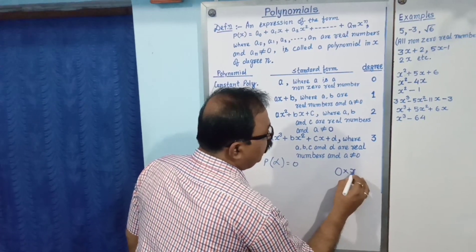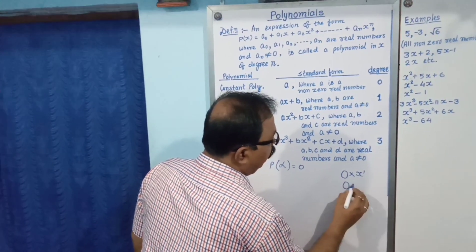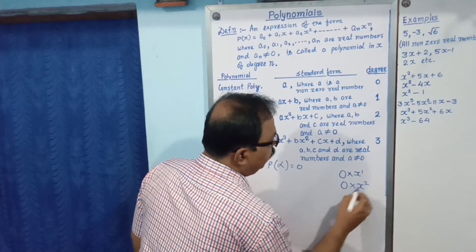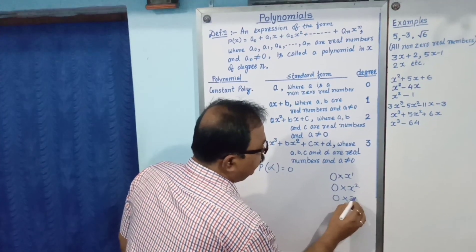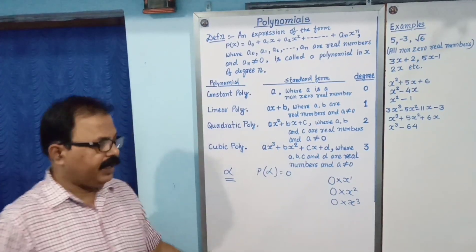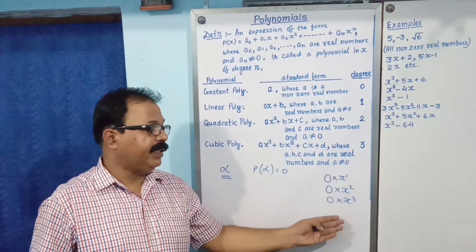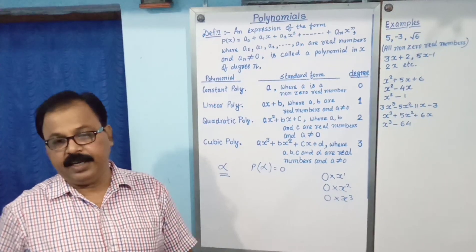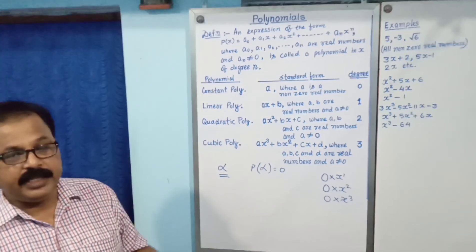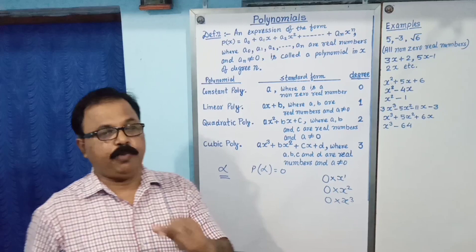Because, 0 into x to the power of 0, 0 into x square, 0 into x3, all are equal value. So, we can say that, the degree of 0 is not defined. So, it is called a unique name, zero polynomial.